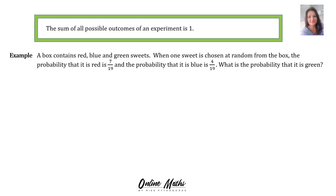The sum of all possible outcomes of an experiment is equal to 1. Let's look at this example. A box contains red, blue, and green sweets. When one sweet is chosen at random from the box, the probability that it is red is 7 out of 19, and the probability that it is blue is 4 out of 19. What is the probability that it is green? We can start by making a formula: P(red) plus P(blue) plus P(green) must be equal to 1.